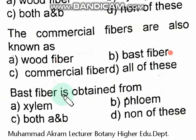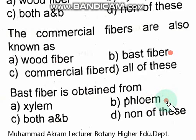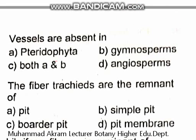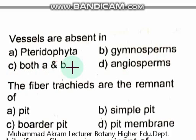Bast fibers are obtained from phloem — these are commercial fibers. Vessels are absent in — this is a very important MCQ — the right option is option C: both bryophytes and gymnosperms lack vessels.